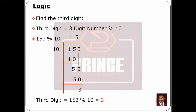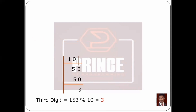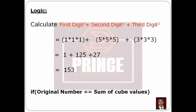This is the logic to separate the three digits. We then calculate the cube and sum. If the final result equals our original number, it is an Armstrong number; otherwise it is not. We use an if-else statement to check this condition and display the result.